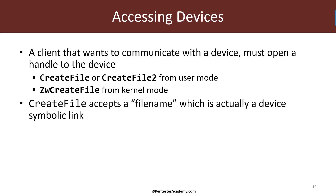The CreateFile function has several parameters. The first one is called 'filename' in the documentation, but it's not exactly a filename — a filename is really just one particular case. In fact, that parameter is a symbolic link, and that symbolic link points to the device you want to access. For files you use something like C:\ and then the path, but C: itself is also a symbolic link. I'll show you that using the WinObj tool from Sysinternals.